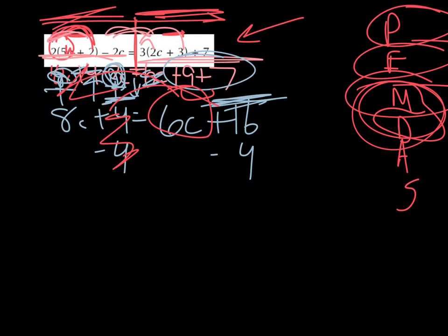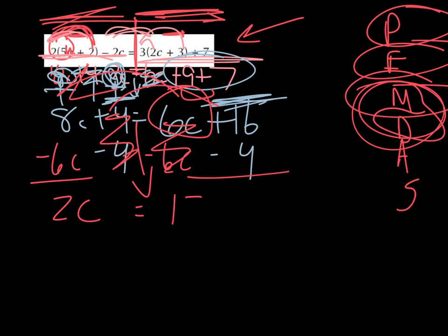So the opposite of positive 6c would be minusing 6c. So that would be 2c. Equal sign comes down. That's gone because I just took it out. And then 16 minus 4 is 12.